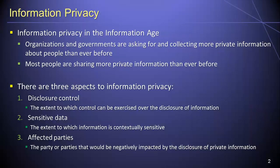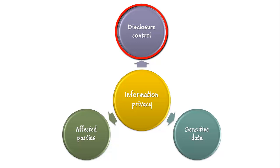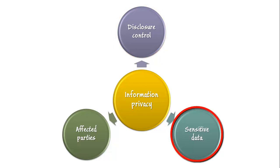In order to better understand the rapid collapse of information privacy since the dawn of the information age, we must become familiar with the three major facets of information privacy. The first of these facets is disclosure control, which refers to the extent to which information can be considered sensitive within a particular context. The second facet is data sensitivity, which also refers to the extent to which information is sensitive within a particular context. Note that the extent to which information can be considered sensitive is often a matter of perspective — after all, one man's trash is another man's treasure.